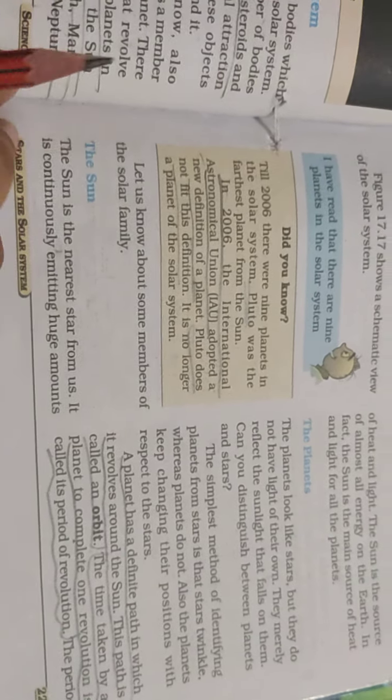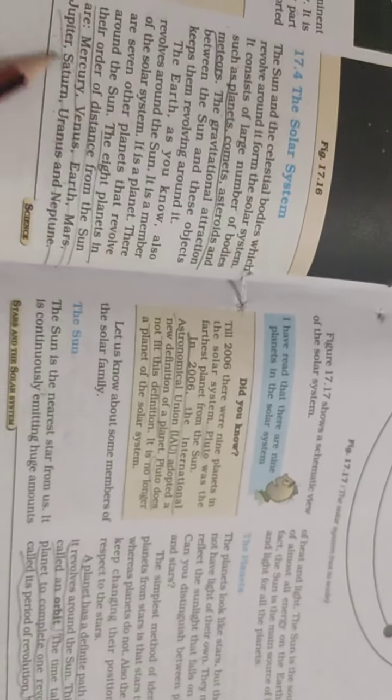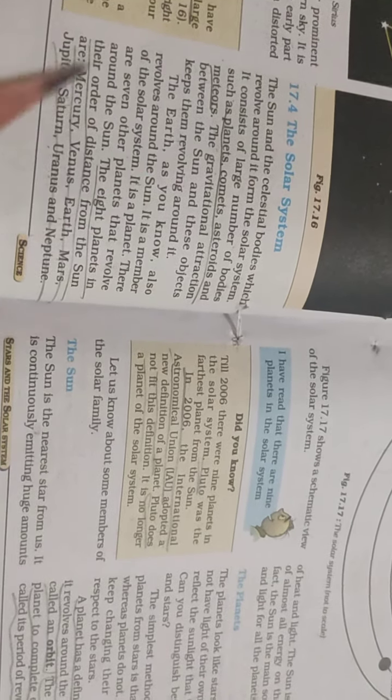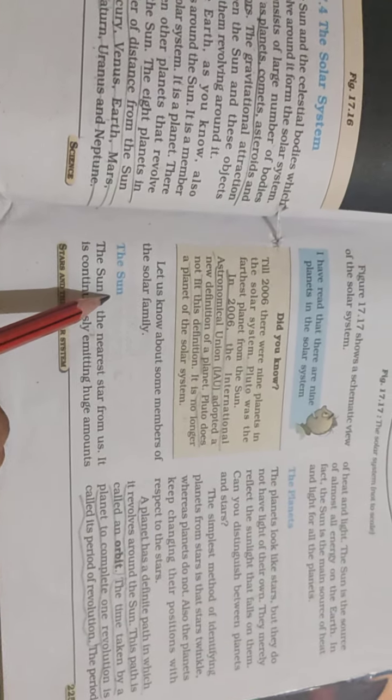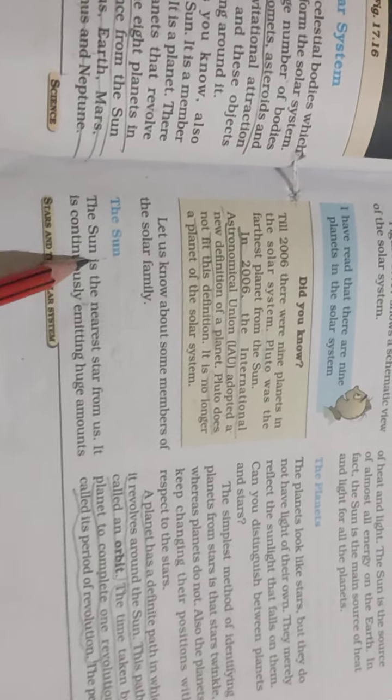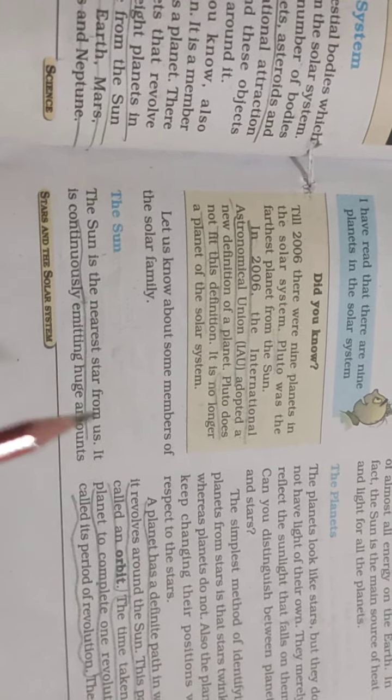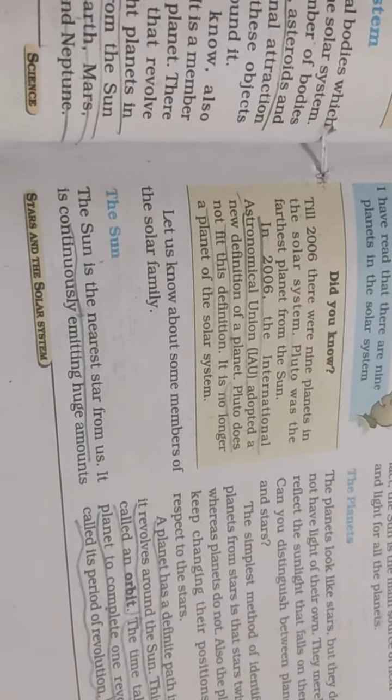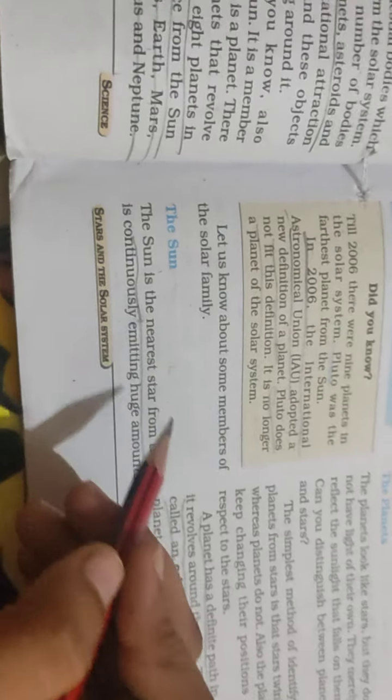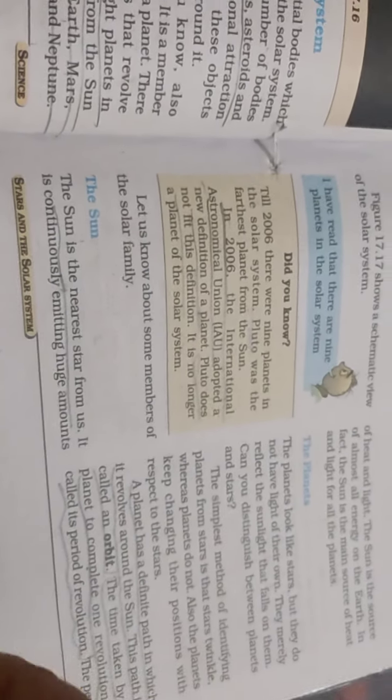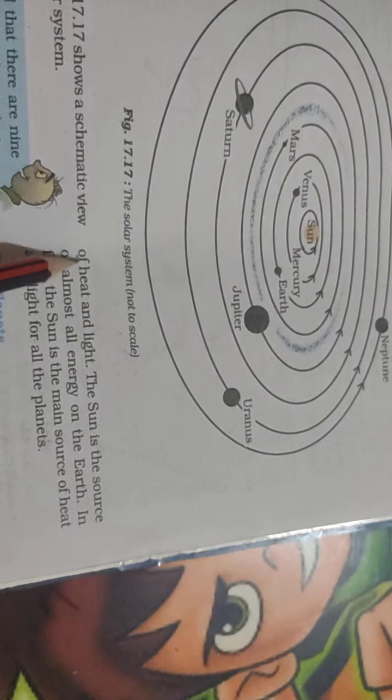So 8th class students, this is your second video based on the solar system. Let's start with the Sun. The Sun is a star. It appears bigger because it is closer to Earth, and it continuously emits a huge amount of heat and light.